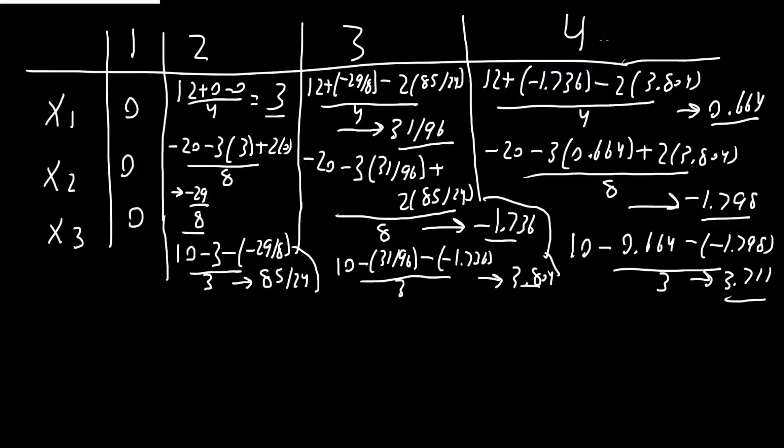Had we done more iterations like 5, 6, 7, the answer would become more and more close to the actual answer. And that is how we can solve systems of linear equations using the Gauss-Seidel method.